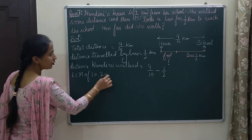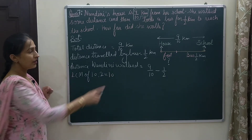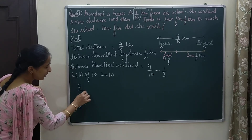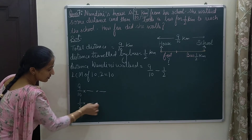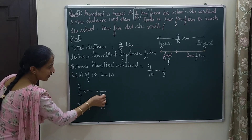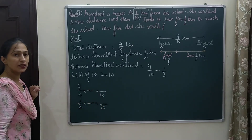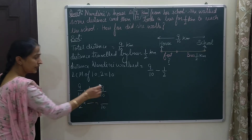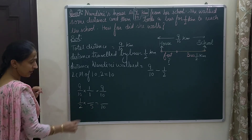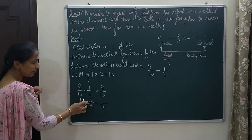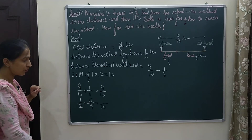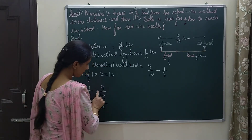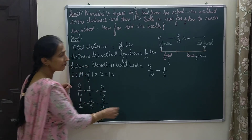The LCM of 10 and 2 is 10. We will convert 9 by 10 and 1 by 2 into equivalent forms with denominator 10. Since 10 is already in the denominator of the first fraction, we multiply by 1 and get 9 in the numerator. For 1 by 2, we multiply the denominator by 5 to get 10, so we multiply the numerator by 5 as well and get 5. Now we have 9 by 10 and 5 by 10.